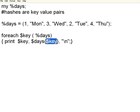In arrays, you have to have contiguous elements like 0, 1, 2, 3, 4. In hashes, they need not be continuous — they can be anything. I am just printing it.